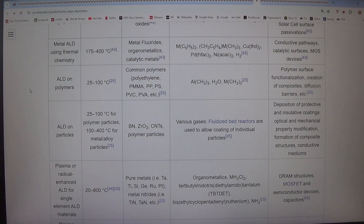ALD on polymers operates at 25-100 degrees C on common polymers including polyethylene, PMMA, PP, PS, PVC, PVA, etc., using Al(CH3)3.